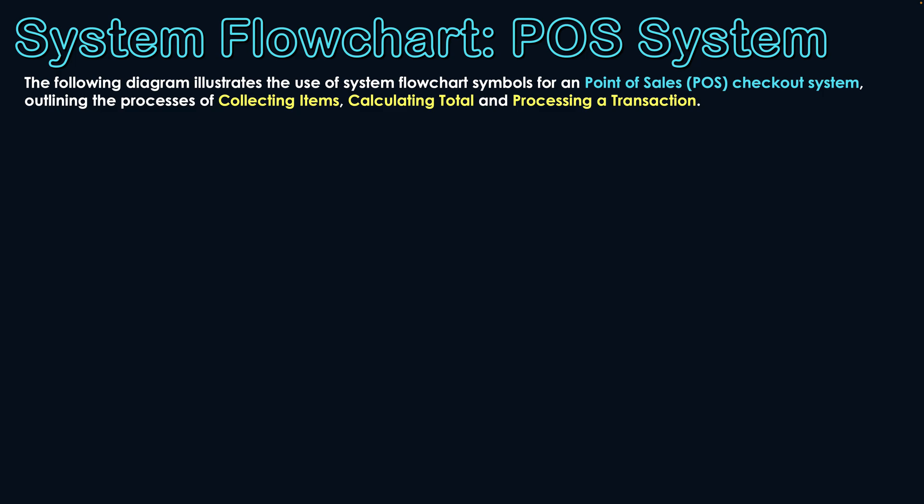This system represents what happens when you go to a shop and buy multiple items — you need to scan those items, a total is calculated by the system, and then you're able to buy those products. This could be at your local supermarket or any retail store, whether it's a self-checkout system or an employee-operated system. We're going to go through these three processes and look at the affiliated symbols.